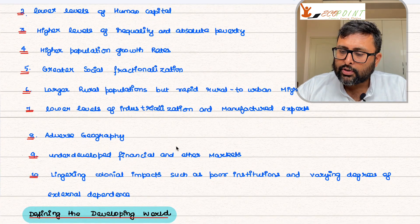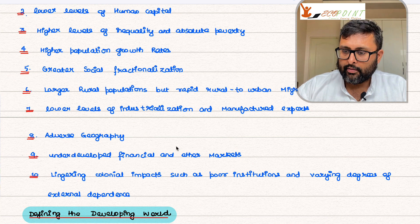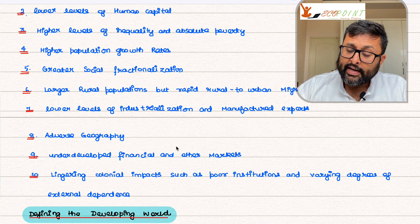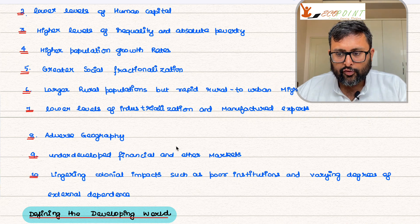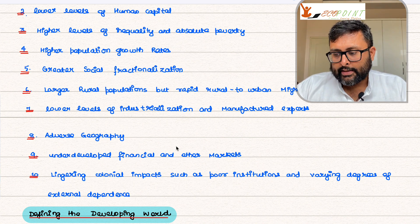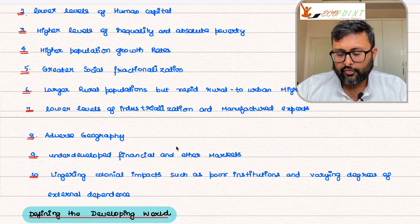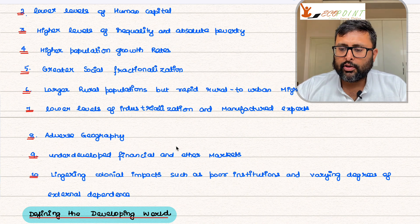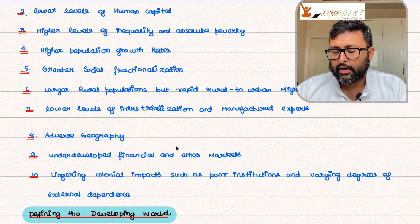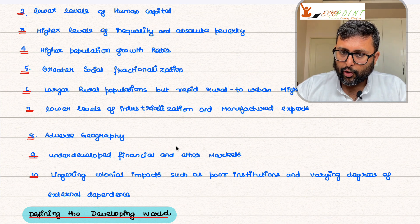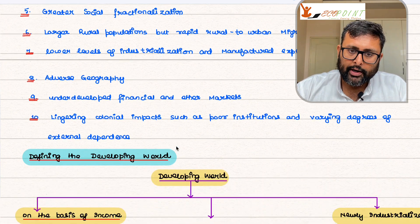There are also lingering colonial impacts. Most of these developing countries were in the past ruled by colonial powers, and that has had an impact on the psyche of the population as well. Finally, there are varying degrees of external dependence — many developing countries look for validation from developed nations and are dependent on the developed world for many things: social dependence, economic dependence, and even cultural dependence. We'll discuss each with proper examples as we move on.